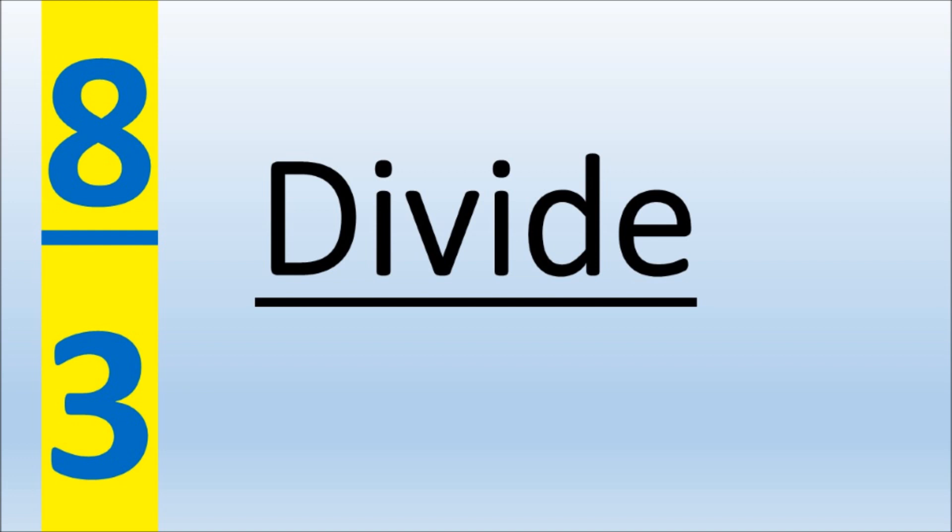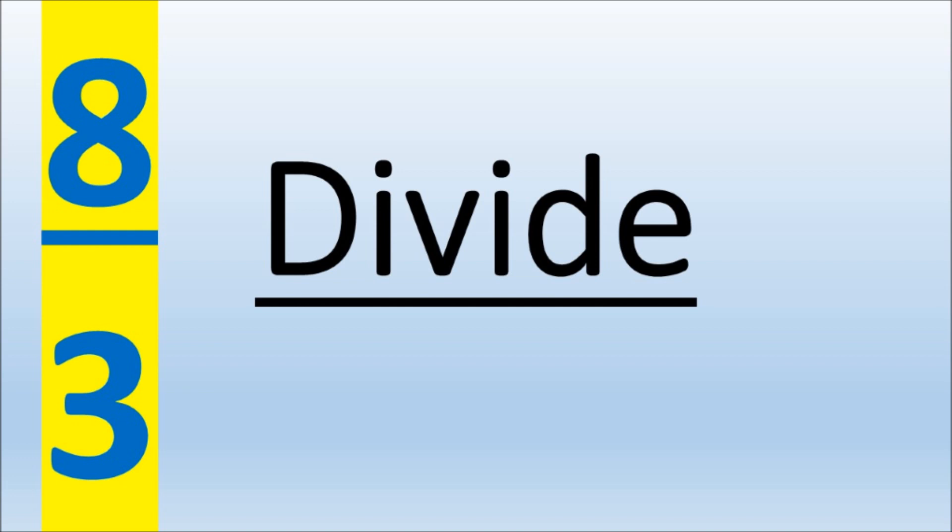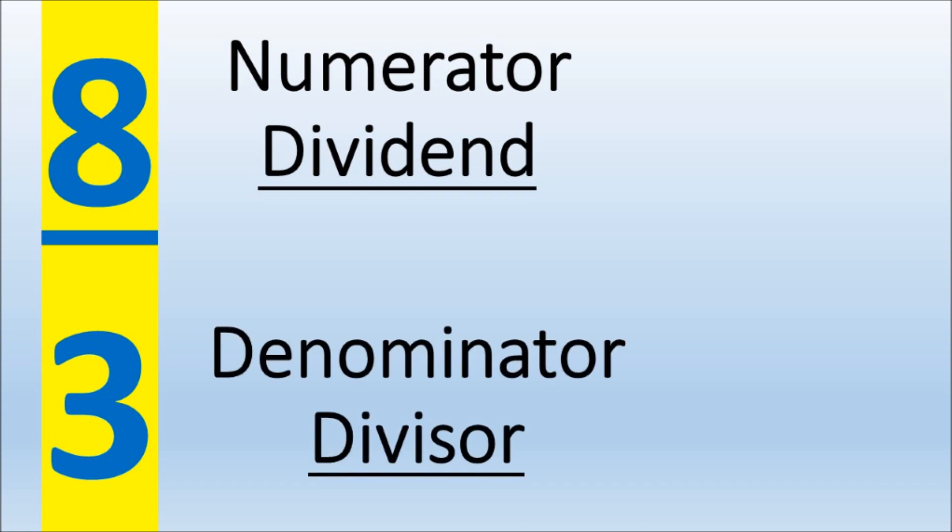To convert this improper fraction to a mixed number we need to divide. The 8 is the numerator or dividend and the 3 is the denominator or the divisor.